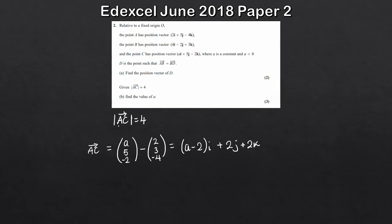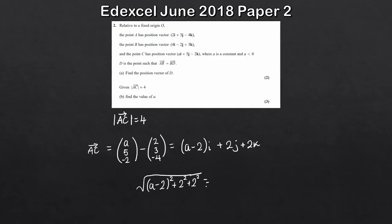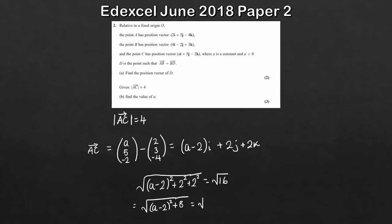Now the magnitude of vector AC is equal to 4. So that's going to be the square root of each component squared: A minus 2 all squared, plus 2 squared, plus 2 squared, and this equals 4. If we square both sides, we get A minus 2 all squared plus 4 plus 4 equals 16, which simplifies to A minus 2 all squared plus 8 equals 16. Subtracting 8 from both sides gives A minus 2 all squared equals 8.